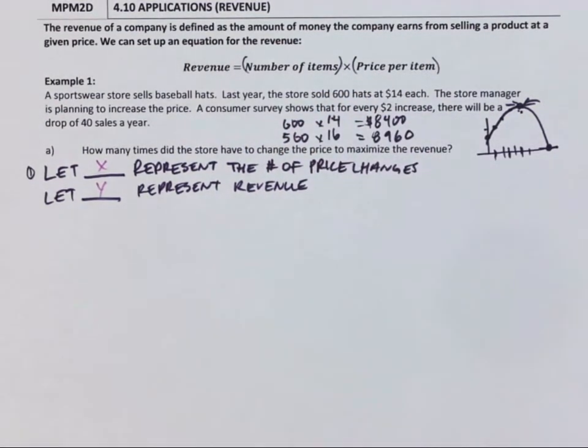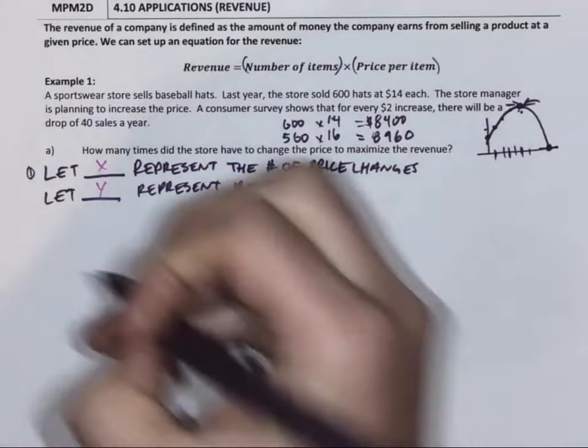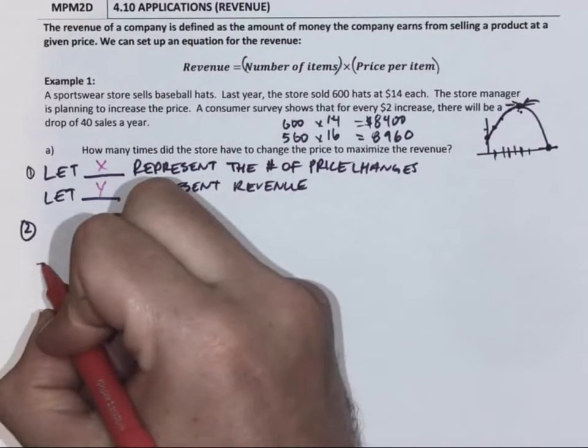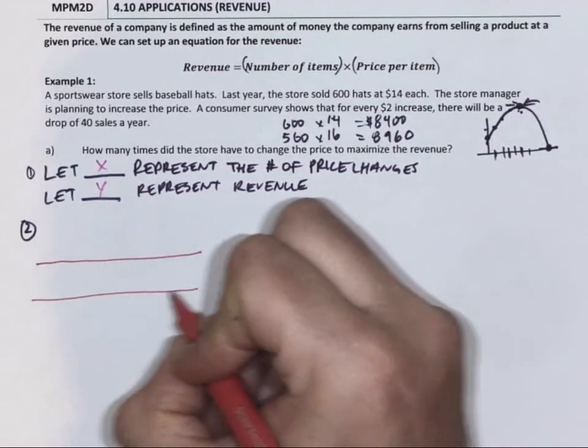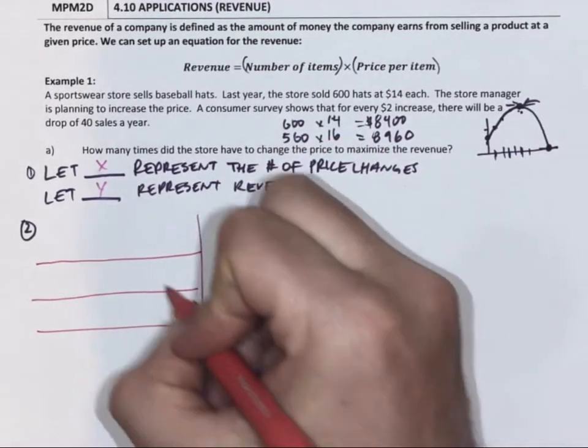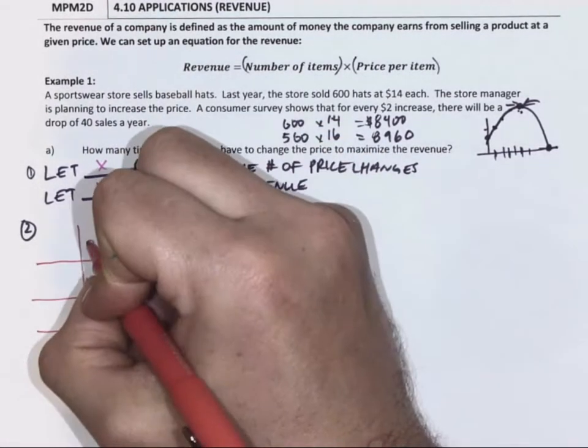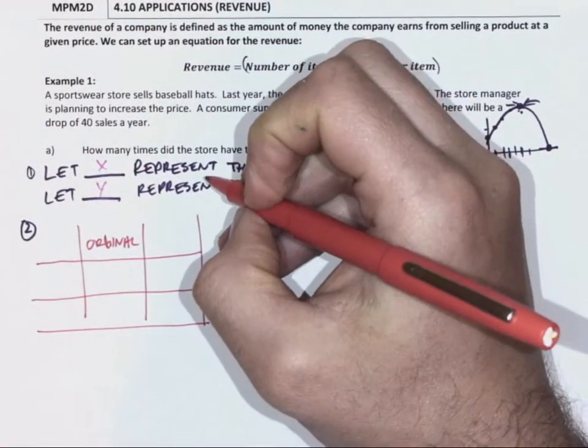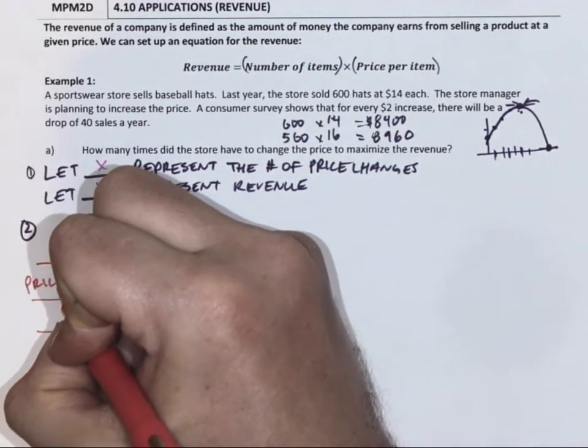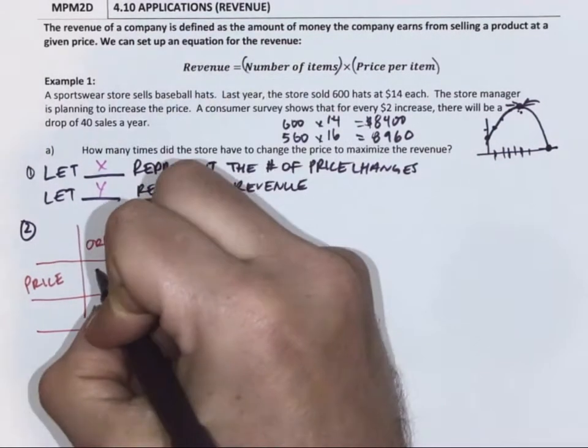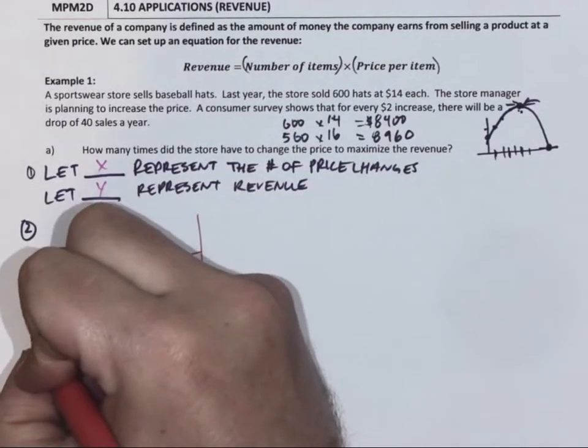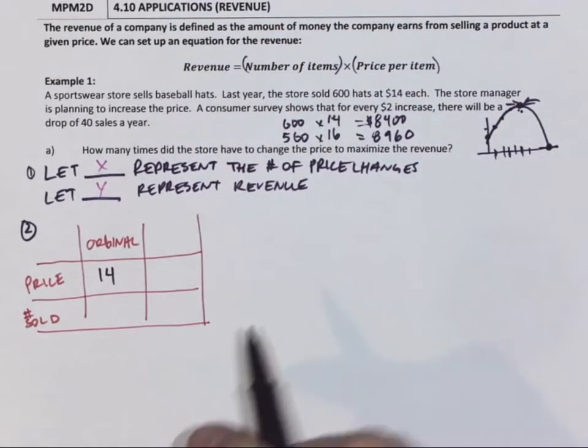Or how much cash we can make. So we're going to set up a table to think about this, because it's going to help us actually create an equation to work from. So if we think about the OG, the original setup for price, it was fourteen dollars, and the original setup for the number that we sold was six hundred.